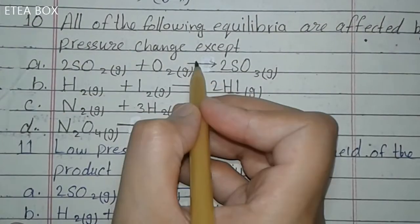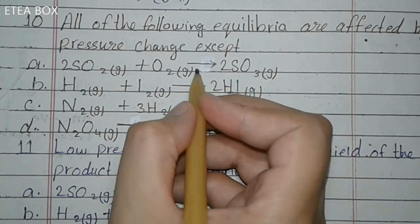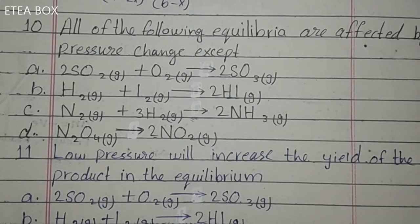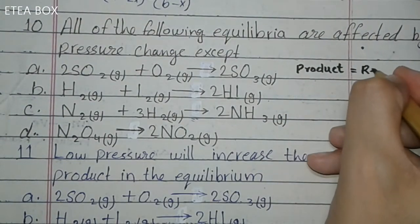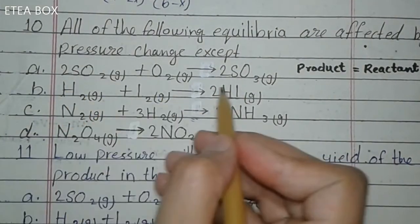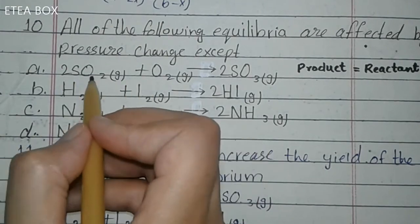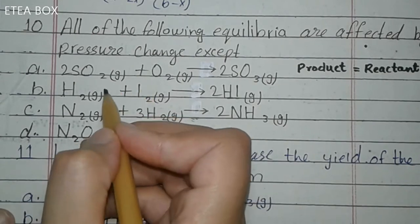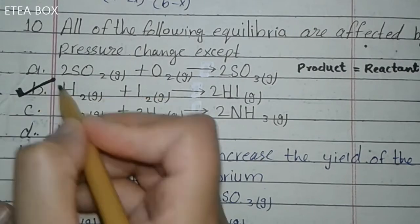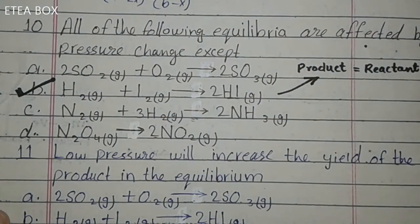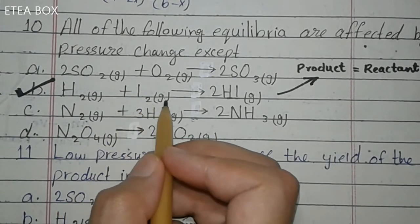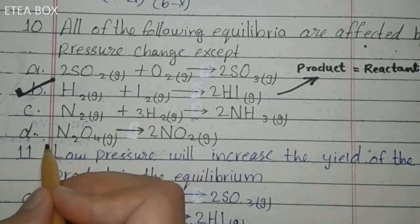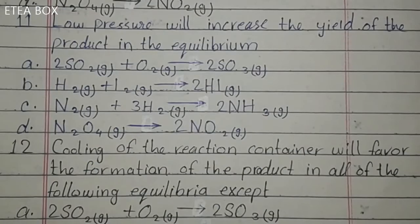All of the following equilibria are affected by pressure change except. Gaseous equilibria are only affected by pressure when the number of moles of product differs from moles of reactant. Here, option B has product moles equal to reactant moles (both equal 2), so it will not be affected by pressure change. Whether we increase or decrease pressure, the equilibrium remains the same. Option B is correct.